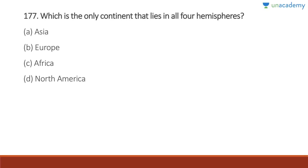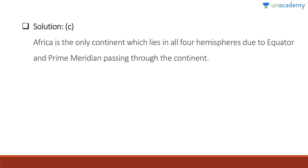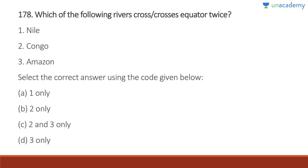Question 177: Which is the only continent that lies in all four hemispheres? Africa is the only continent in all four hemispheres — north, south, east, and west. The equator and prime meridian both pass through Africa. Answer is C.